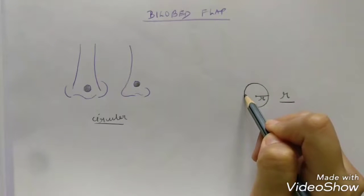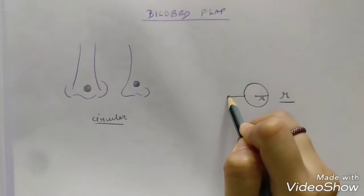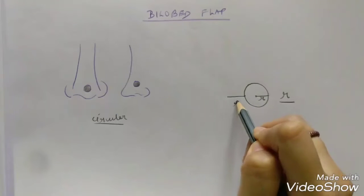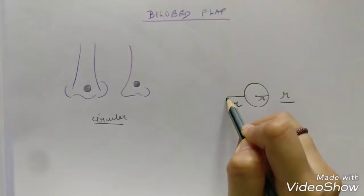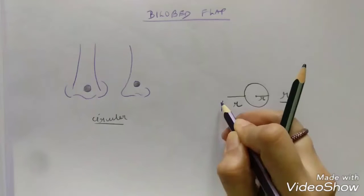The pivot point is taken from the defect at a distance equal to the radius of the defect. So again from the defect another radius length is taken and at that side will be the pivot point P.